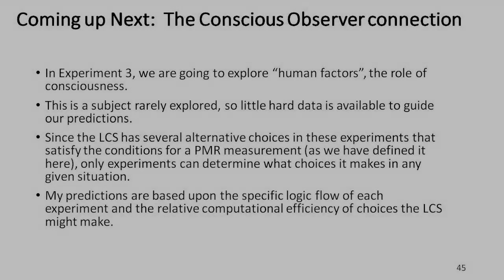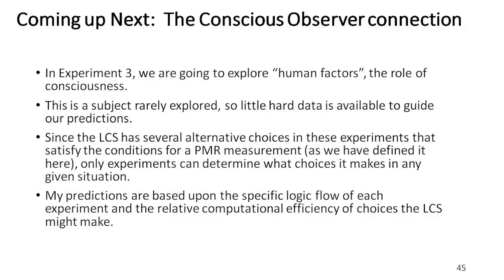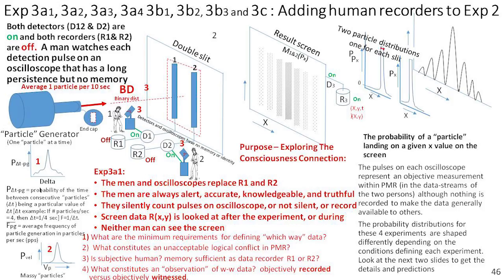Coming up next, we're going to talk about conscious observer connection. What I have done here is kind of a study in how one defines which way data is recorded. Can it just be recorded in the mind of a man? In other words, a man sees which slit it goes through. Does it have to be recorded on some kind of electrical recorder, written down on paper, some kind of hard copy? What are the requirements for this data being recorded? It's not clear whether it's just a person who sees it, or whether it has to be something that is objectively available to everyone.